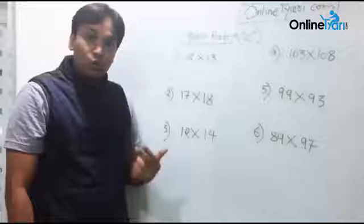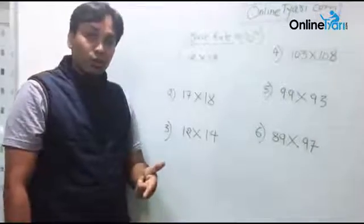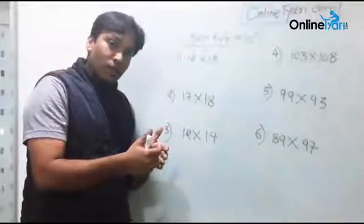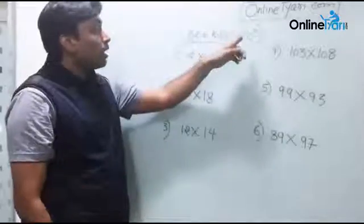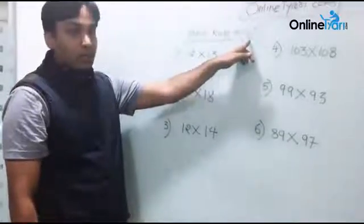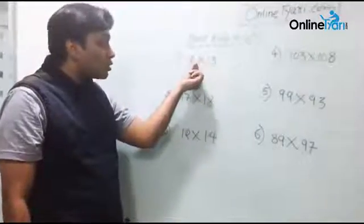What is rule number two out here? Rule number two is these numbers should be close to some base of 10. So these two numbers are closer to 10.